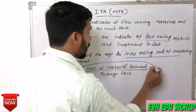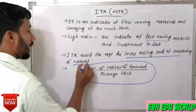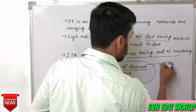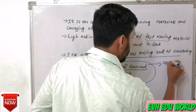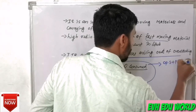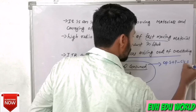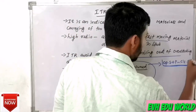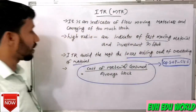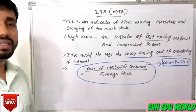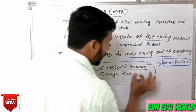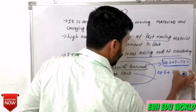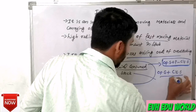The cost of material consumed is divided by average stock. The cost of material consumed equals opening stock plus purchases minus closing stock. The average stock equals opening stock plus closing stock divided by 2.